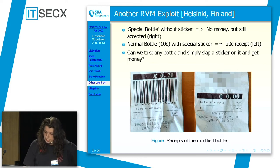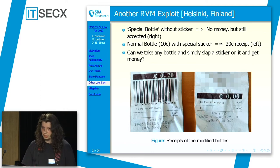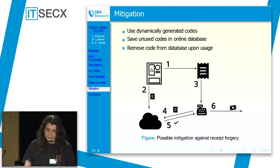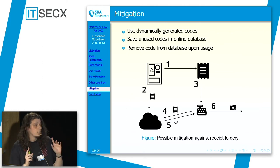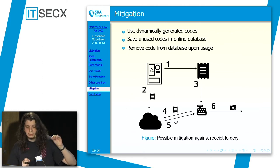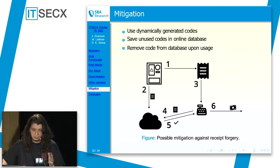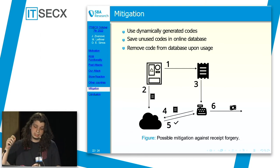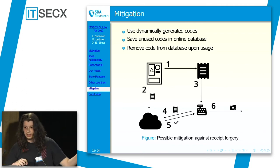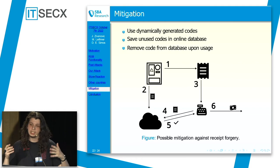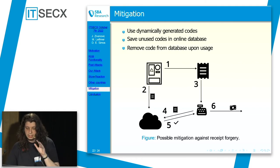Knowing all this, how difficult is it to make the system secure? Technically, it's not that difficult. Generally they do the following: when a machine prints a receipt, the receipt is sent to some sort of cloud or database, and when you use the receipt at the cash register, the register queries the cloud or database and simply checks if this receipt exists there.